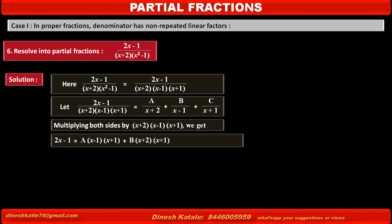Multiplying the second term by the same product cancels its denominator x minus 1, so the second term becomes B into (x plus 2)(x plus 1). Multiplying the third term cancels its denominator x plus 1, and the third term becomes C into (x minus 1)(x plus 2). Consider this as equation 1.